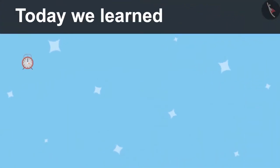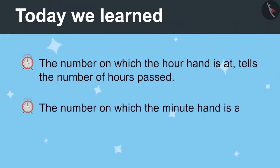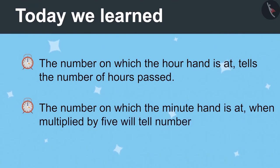Today we learnt the number on which the hour hand is at tells the number of hours passed, and the number on which the minute hand is at multiplied by five will tell the number of minutes passed.